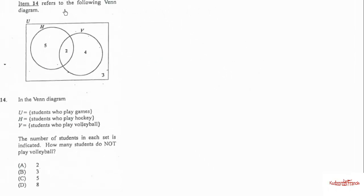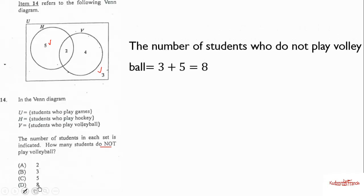Item 14 refers to the following Venn diagram. In the Venn diagram, U equals students who play games, H equals students who play hockey, and V equals students who play volleyball. The number of students in each set is indicated. How many students do not play volleyball? So do not play volleyball is this region and this region. We add this and this and that will be equal to 8.